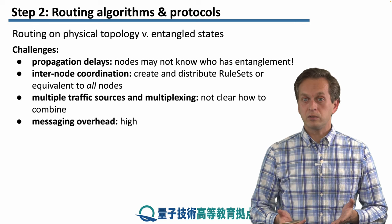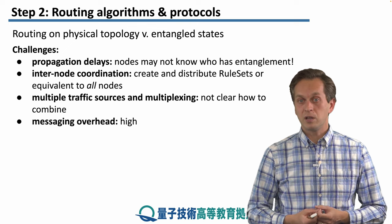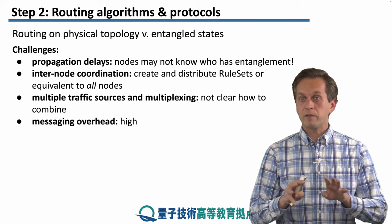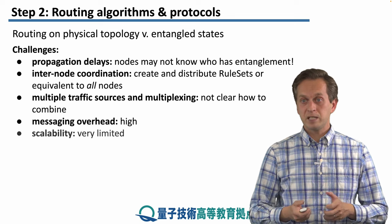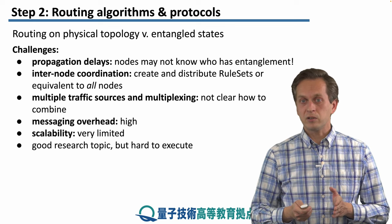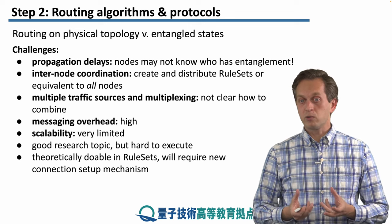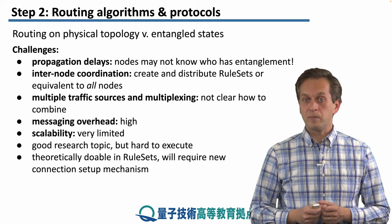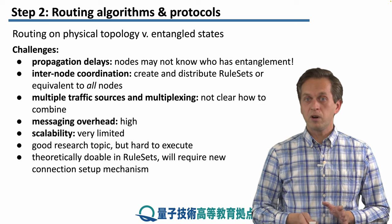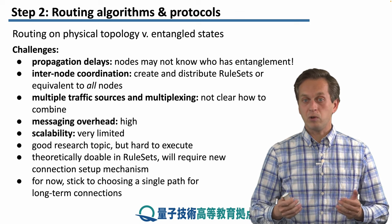Knowing the state of the network and who is entangled with whom at all times is very challenging in terms of messaging overhead. Messages must be constantly exchanged not only locally but between all nodes of the network, presenting a huge challenge for scalability. Routing is a good research topic, but it's very hard to execute. Theoretically, rule sets could be used for this, but they will definitely require some new connection setup mechanisms. For now, we stick to a simple approach of choosing a single path between two nodes for long-term connections.